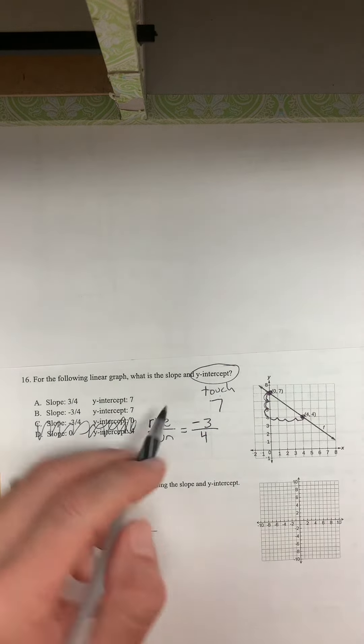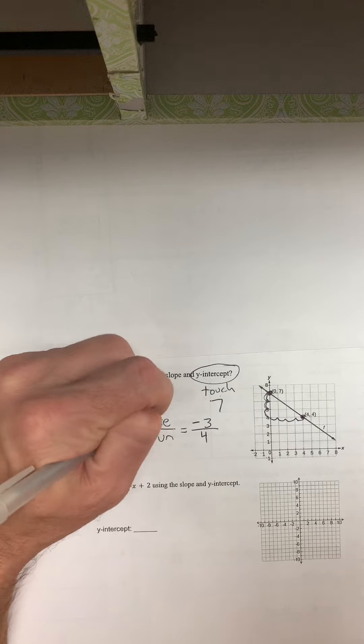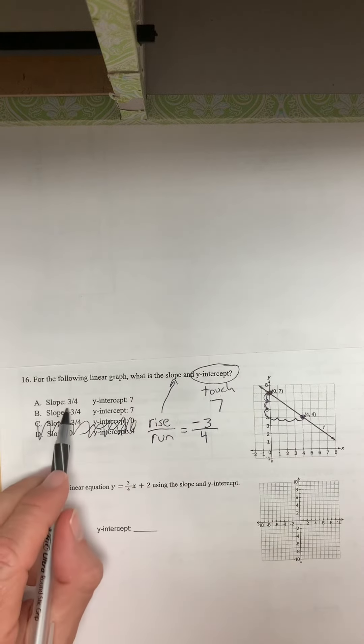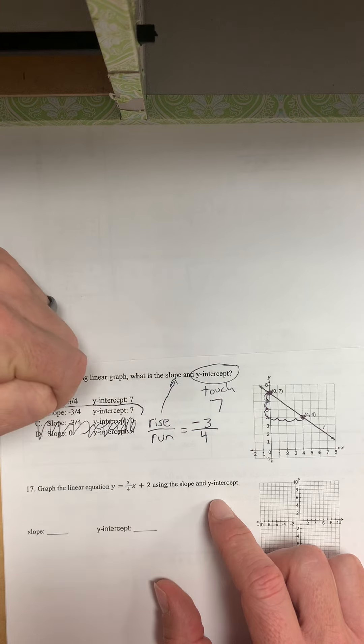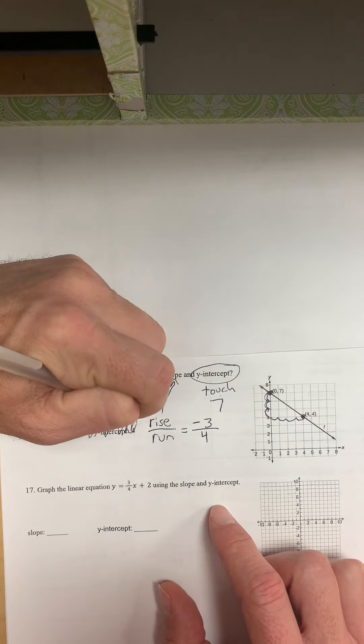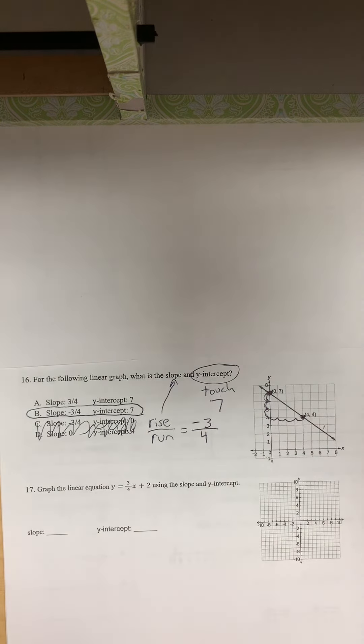So our slope is negative 3 fourths. Well, I guess it's B. Very good.